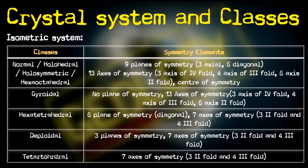The first class is the normal class, also called the holohedral class. It has the maximum number of symmetry elements in the isometric system: nine planes of symmetry, of which three are axial and six are diagonal planes. There are 13 axes of symmetry including three fourfold, four threefold, and six twofold axes. There is also a center of symmetry. All classes of the isometric system will have four axes of threefold symmetry as this is inherent to the system.